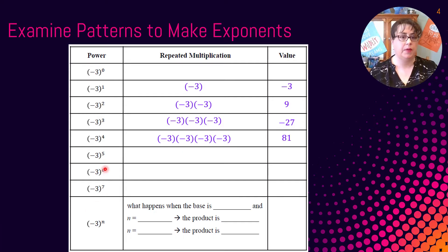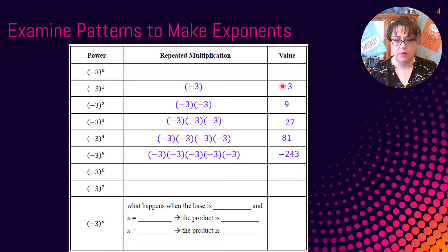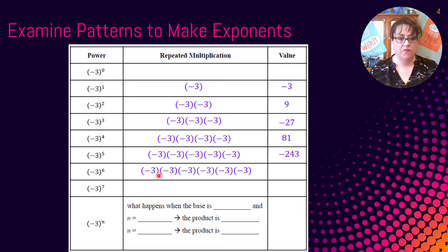Let's run through the next few quickly. Negative 3 multiplied out five times: we know the first four gave positive 81, so 81 times negative 3 is negative 243. Notice we're alternating: positive, negative, positive, negative. Negative 3 used six times: we know the first five is negative 243, so negative 243 times negative 3 — a negative times a negative is positive — gives positive 729.